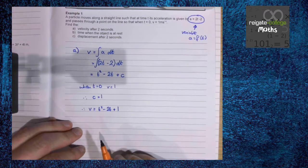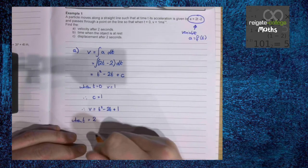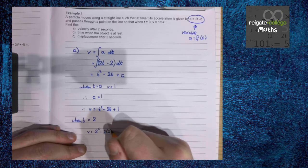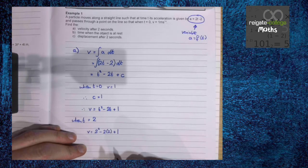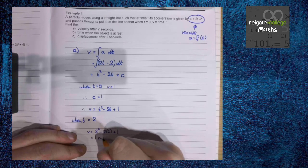So therefore our velocity is t squared minus 2t plus 1. We now can answer the question: when t equals 2, v equals 2 squared minus 2 times 2 plus 1, which is 1 meters per second.